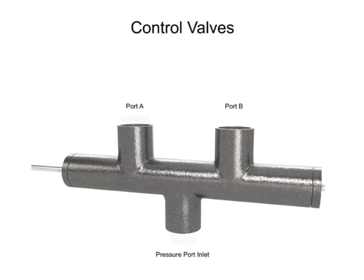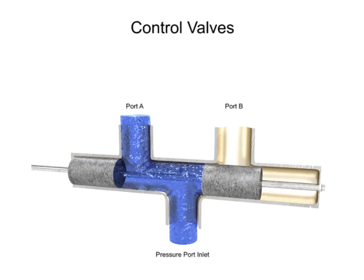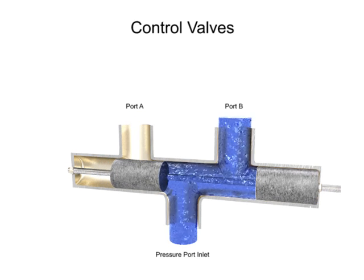Directional control valves are used to stop, start, route, and divert fluid streams without affecting the pressure level or the flow rate of the system.